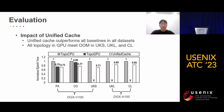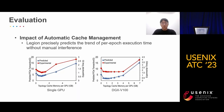This figure shows the impact of unified cache. The baselines are TOPO CPU and TOPO GPU. TOPO CPU means putting all topology in CPU memory; TOPO GPU means putting all topology in GPU memory. We observe that the unified cache outperforms all baselines in all datasets, while TOPO GPU even meets out-of-memory error. Finally, this figure shows the impact of automatic cache management. The goal of this mechanism is to predict system throughput trend, so we use pre-application time as metric and compare the trend of predicted PCIe traffic with the trend of experimental execution time. Legion precisely predicts the trend of pre-epoch execution time without manual interference.